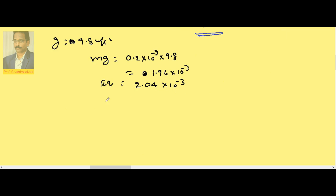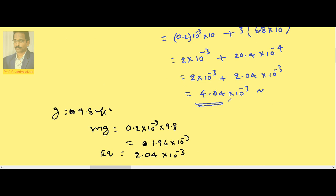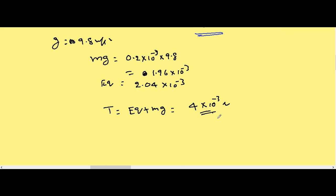Therefore, total tension Eq plus mg, which is 4 × 10⁻³ N. So if I take g as 10, the value is 4.04. If I take g as 9.8, it is 4 × 10⁻³.